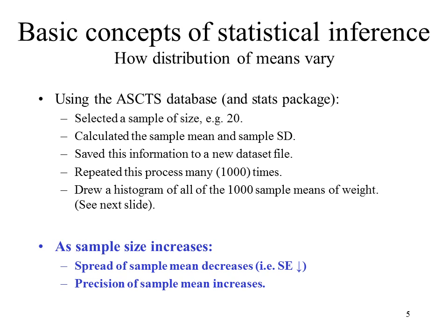So how does the distribution of these means vary? Using the cardiac surgery database and STATA, I selected a sample of a particular size — for example, a size of 20. I wrote some code so I didn't have to do this over and over again — code to calculate the sample mean and the sample standard deviation. This code also enabled me to save this information into a new dataset. I repeated this process 1,000 times, then opened the new dataset and drew a histogram of all 1,000 sample means of the weight.